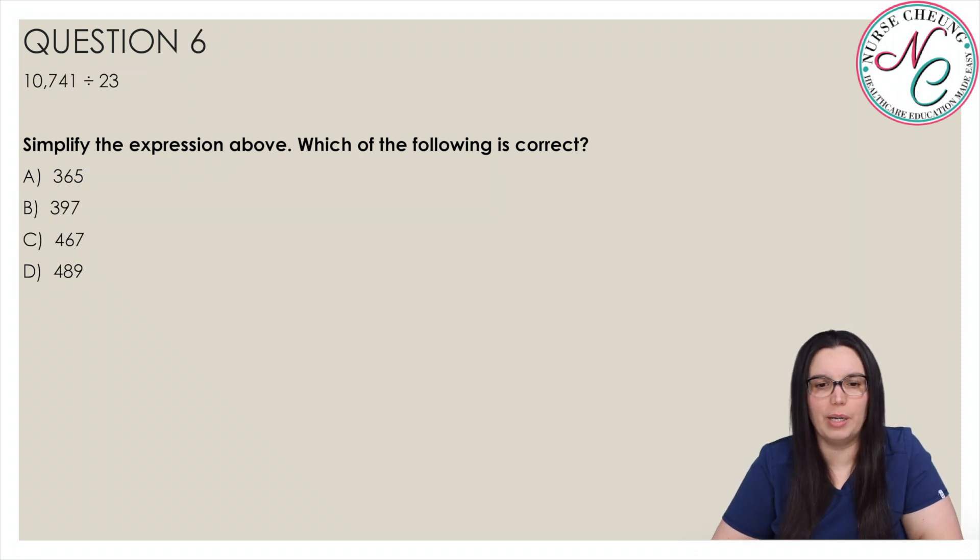10,741 divided by 23. Simplify the expression above which of the following is correct? Is it A, 365, B, 397, C, 467, or D, 489? And the correct answer is C, 467. To check your work, multiply 23 by 467 to get the original number 10,741, making the correct answer 467.